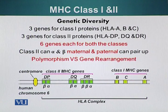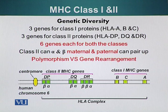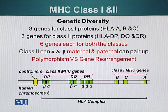Diversity is very important for the immune system. B cells and T cells manufacture TCRs and BCRs which are very diverse — a result of gene rearrangement. MHC proteins also need diversity to be able to capture different types of protein or peptide fragments and display them on the surface of the cell.